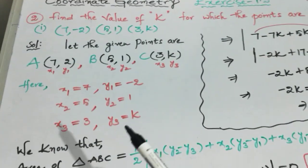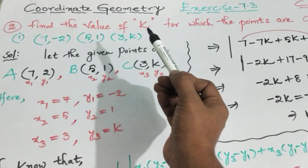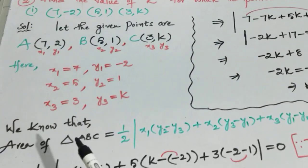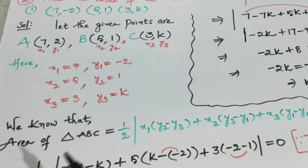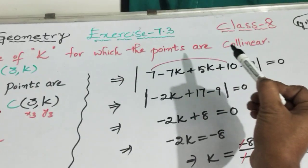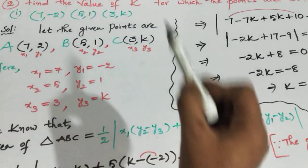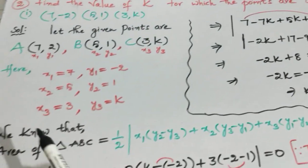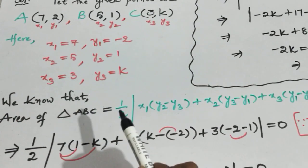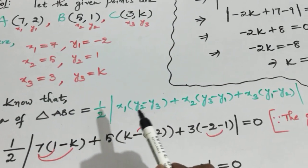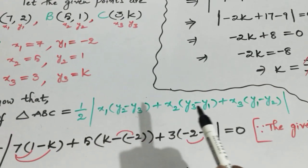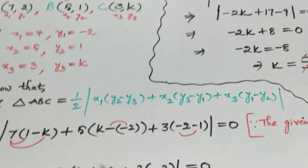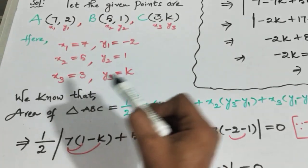To find the value of K, we use the area of triangle formula. Since the points are collinear, the area is equal to zero. The area of triangle ABC equals half times the modulus of x1(y2 - y3) + x2(y3 - y1) + x3(y1 - y2), and this equals 0.